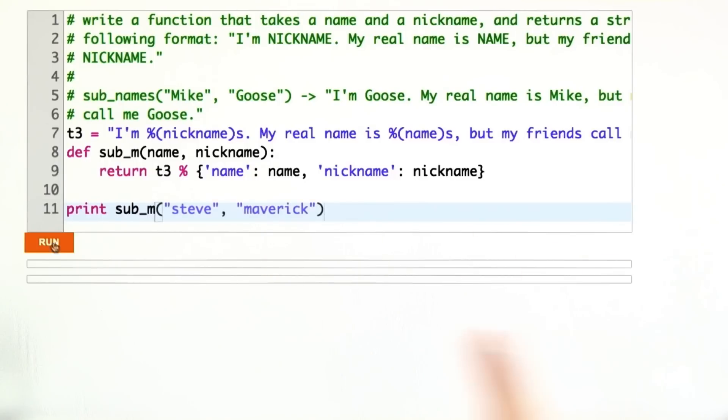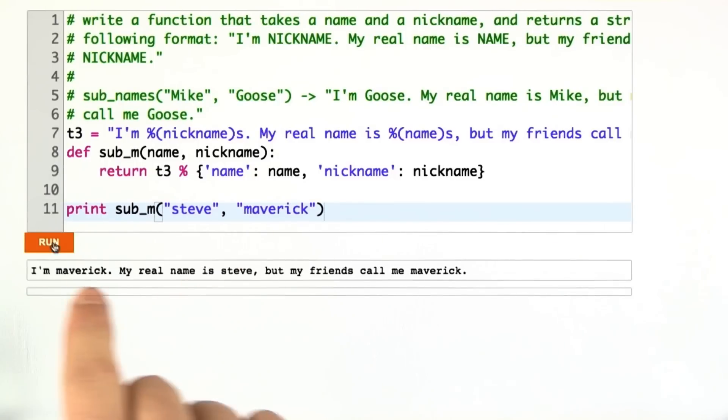Let's make sure this works. I run this with a couple things, and it says, I'm Maverick, my real name is Steve, but my friends call me Maverick.